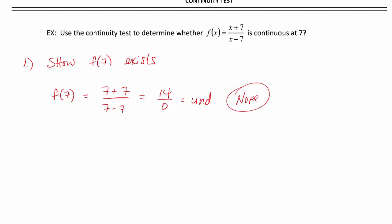So since it didn't exist, I'm not even going to waste my time with the other two parts of the test because all three things have to happen. So we can conclude f of x is discontinuous at x equals 7 because f of 7 does not exist.